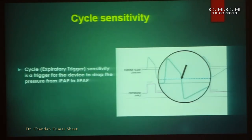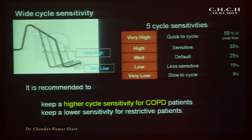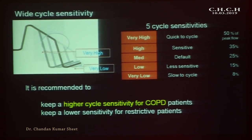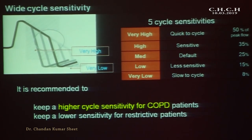Cycle is the transition from IPAP to EPAP — the initiation of expiration. There are five cycle sensitivity settings: very high, high, medium, low, and very low. For a COPD patient with CO2 retention, we want expiration to start early so CO2 can be effectively washed out. In restrictive lung disease where hypoxia is predominant, we can increase inspiratory time by using very low cycle sensitivity.